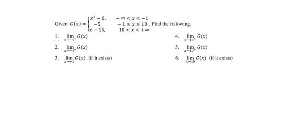Question number 1. We have the limit as x approaches negative 1 from the positive side. This means that they go from here — from the positive side — and we get negative 5. So the answer here is negative 5.